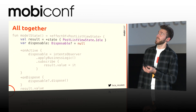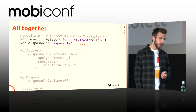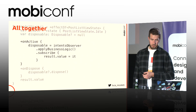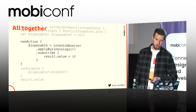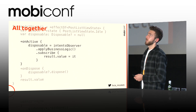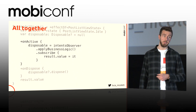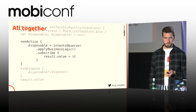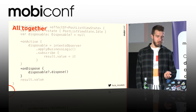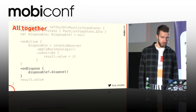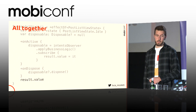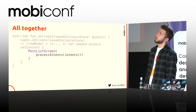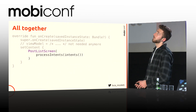It subscribes to the intent with an intent observer and returns a model state. A model state is an effect on our state. We set up a state with a default value and a disposable in order to collect everything. Inside onActive, we subscribe to our intent, apply the business logic of our screen — API calls, flatMap, map, filter, whatever — we subscribe to it and update the value of the result. On dispose, we dispose everything in order to not leak anything, and we return the view state.